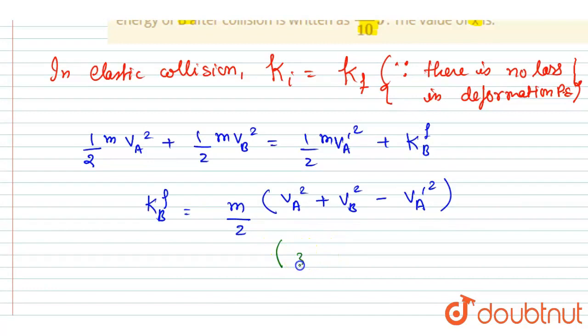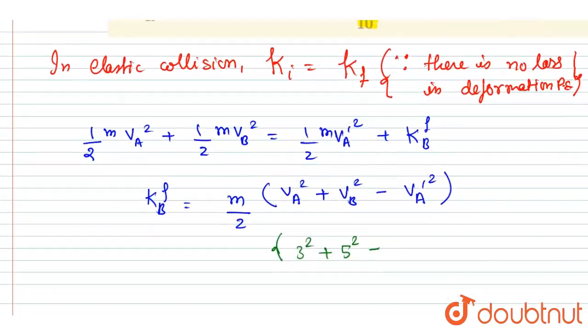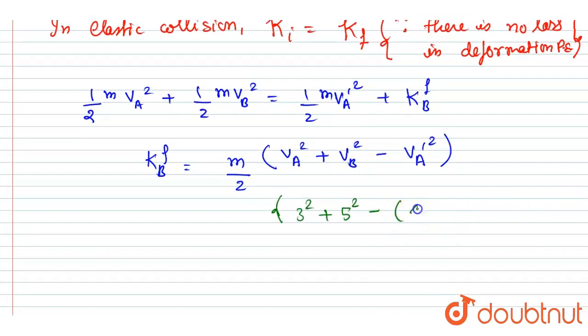So you can see here v_A is 3 and v_B is 5. So just start putting out the value here: 3 squared plus 5 squared minus, if you see here we are also given the velocity of A after collision, that is 4i plus 4j.